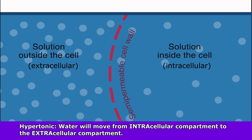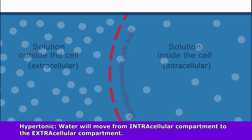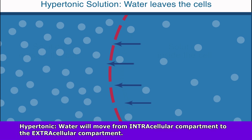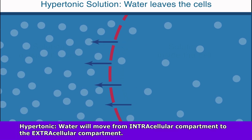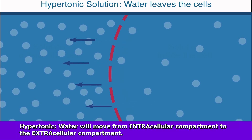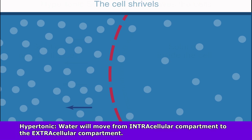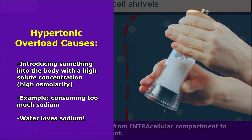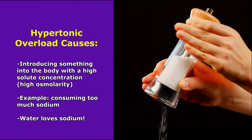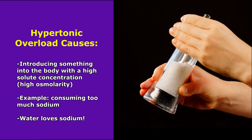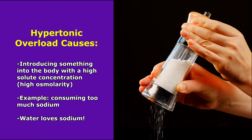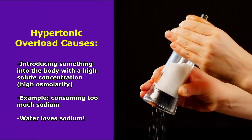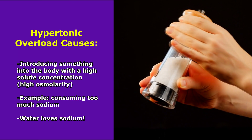This happens due to an increase of osmolarity — hence the solute concentration — in the extracellular compartment, which causes fluid, hence water, to move from the intracellular compartment to the extracellular compartment. When thinking of the causes of this type of overload, think of causes where something with a high concentration of solutes, hence a high osmolarity, is being introduced into the body.